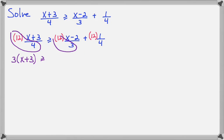12 over 3 makes 4. And here 12 over 4 makes 3 again. Now distribute your 3 and distribute your 4. And now I have some terms on the right side that could be combined. Negative 8 plus 3 makes negative 5.